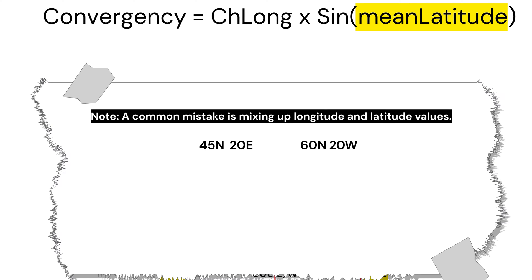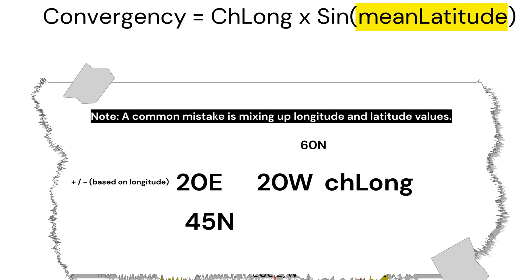Note, a common mistake is mixing up longitude and latitude values. The 20 degrees east and 20 degrees west determine ChLong, while 45 degrees north and 60 degrees north determine mean latitude.